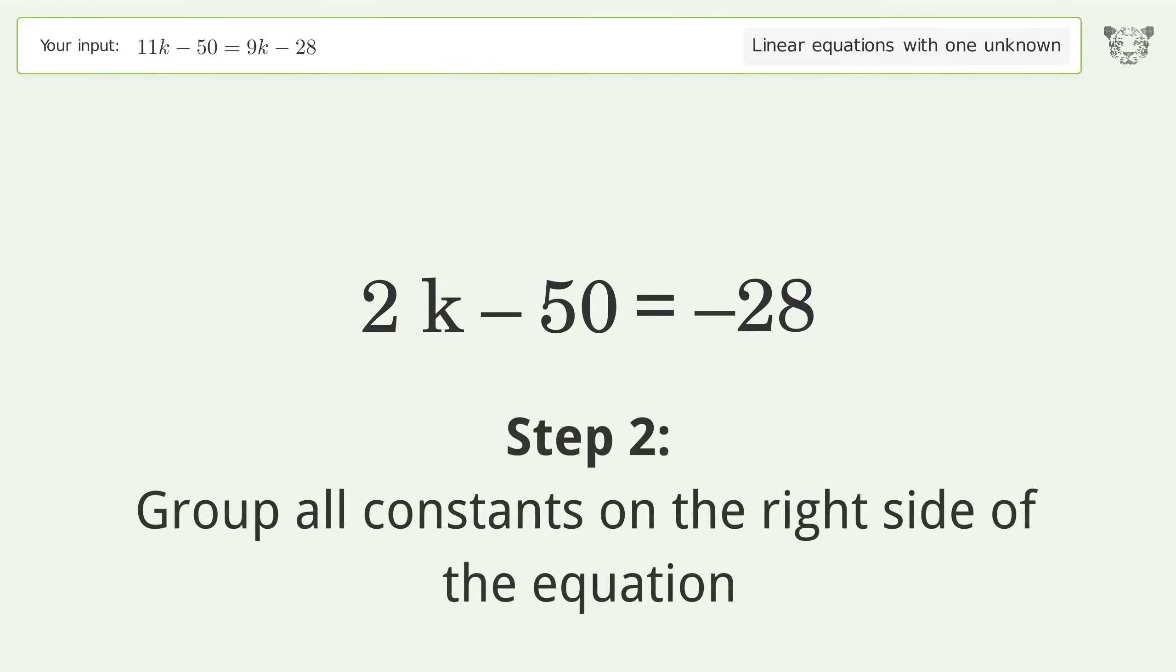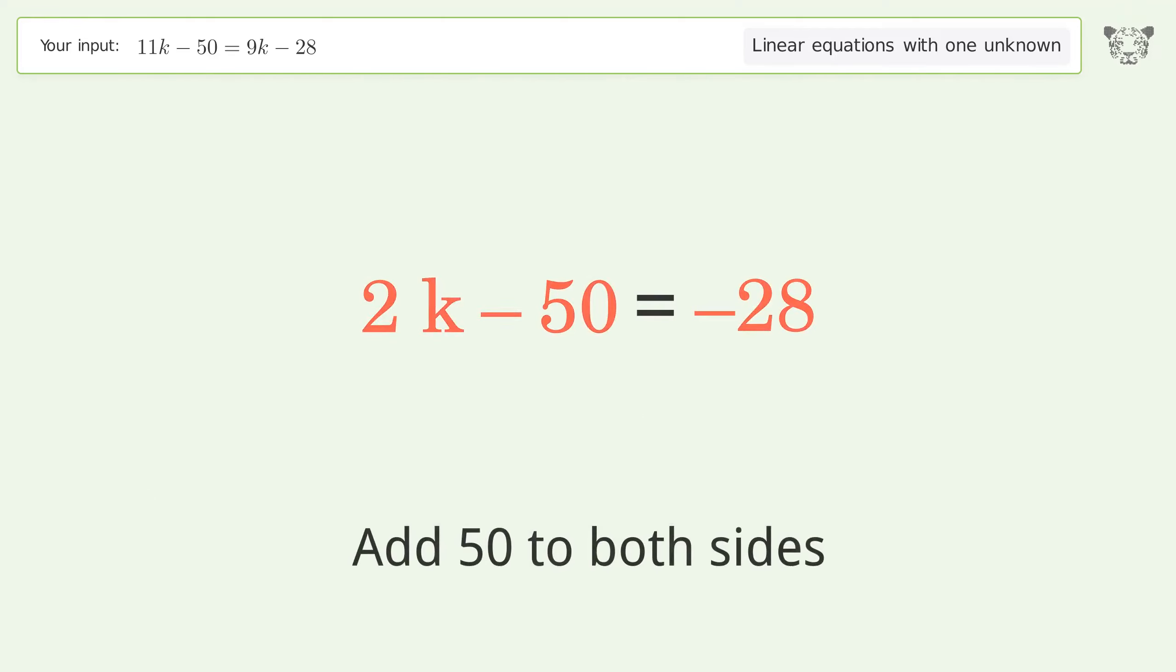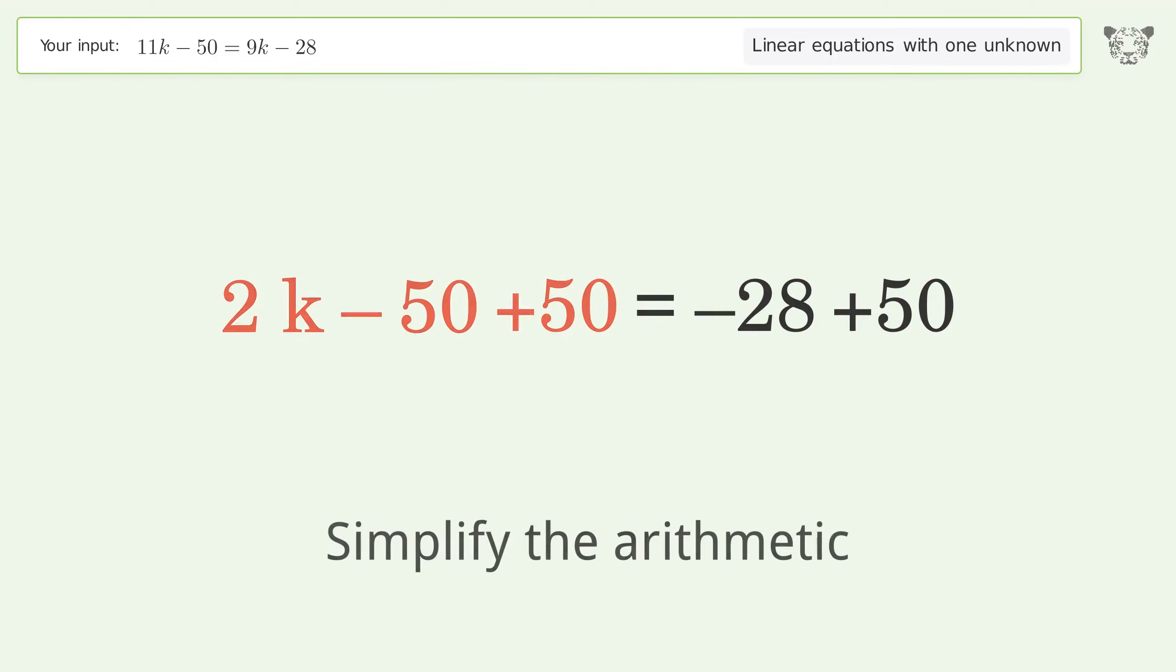Group all constants on the right side of the equation. Add 50 to both sides. Simplify the arithmetic.